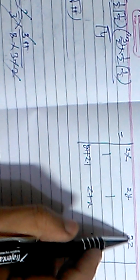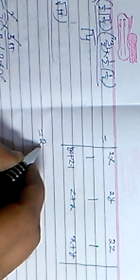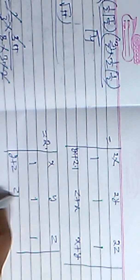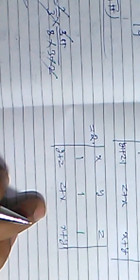Now we need to solve this determinant. First, we take 2 as common from the first row. By the property of determinants, if a quantity is common in any row or column, we can take it outside the full determinant. After taking 2 out, the first row becomes x, y, z; the second row is 1, 1, 1; and the third row is y+z, z+x, x+y.